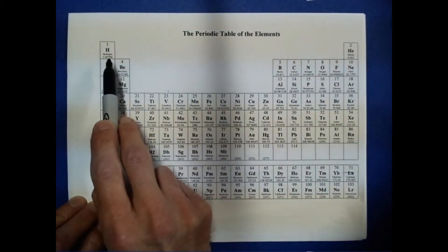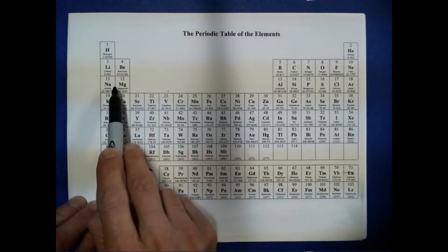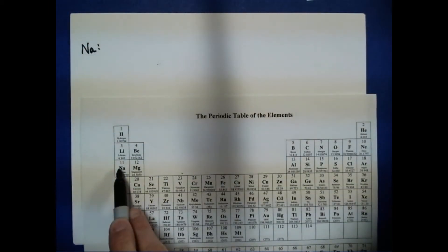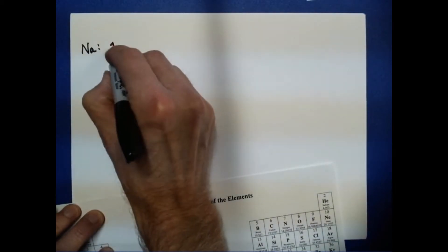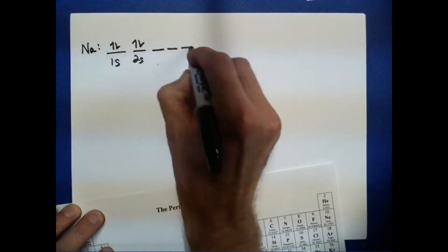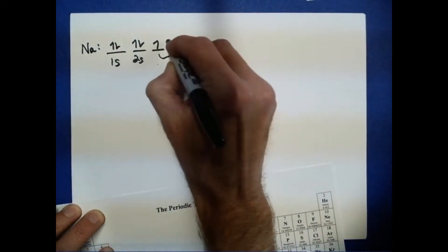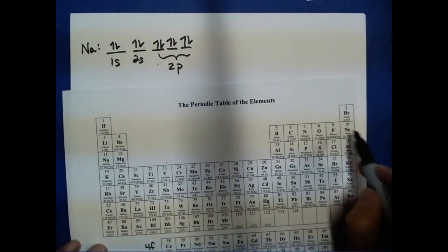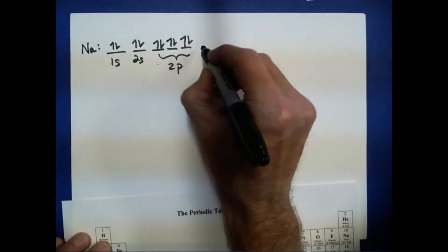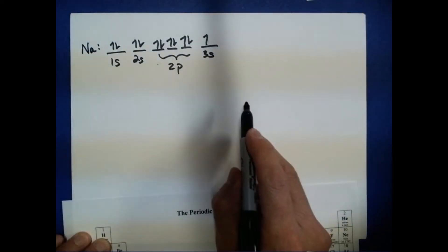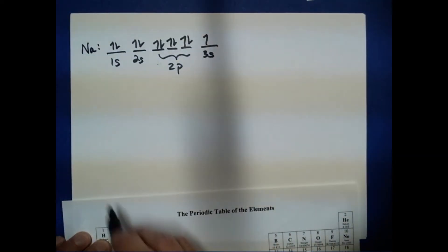First, I'm going to draw the electronic configuration for both of these atoms. For sodium, we need to put in 11 electrons: 1s², 2s², 2p⁶ — that gets us to neon — and then 3s¹. That's the electronic configuration for sodium, and for magnesium we'll just have two electrons in the 3s, so 3s².